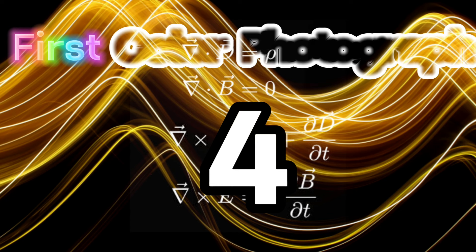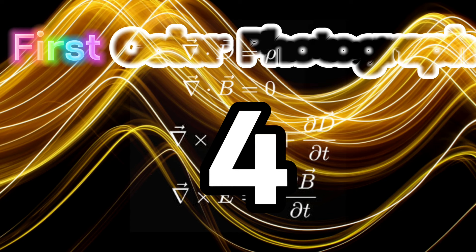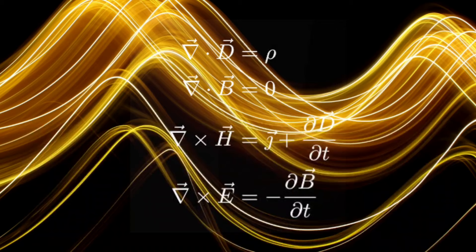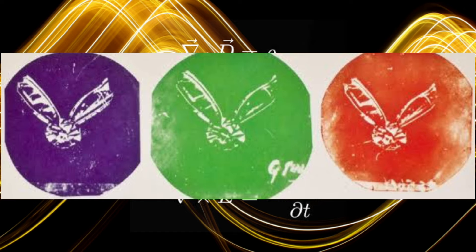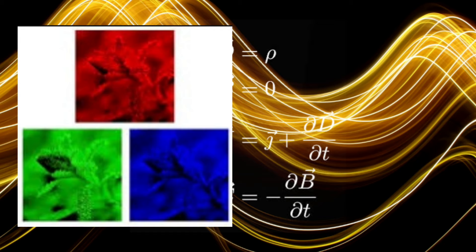4. First color photograph. In 1861, Maxwell produced the world's first color photograph by taking three separate black and white photographs of a ribbon, each through a different colored filter: red, green, and blue. He then projected the three images using the same filters to create a full color image. This pioneering work laid the groundwork for color photography and the principle of color vision that underpins modern color reproduction technologies.